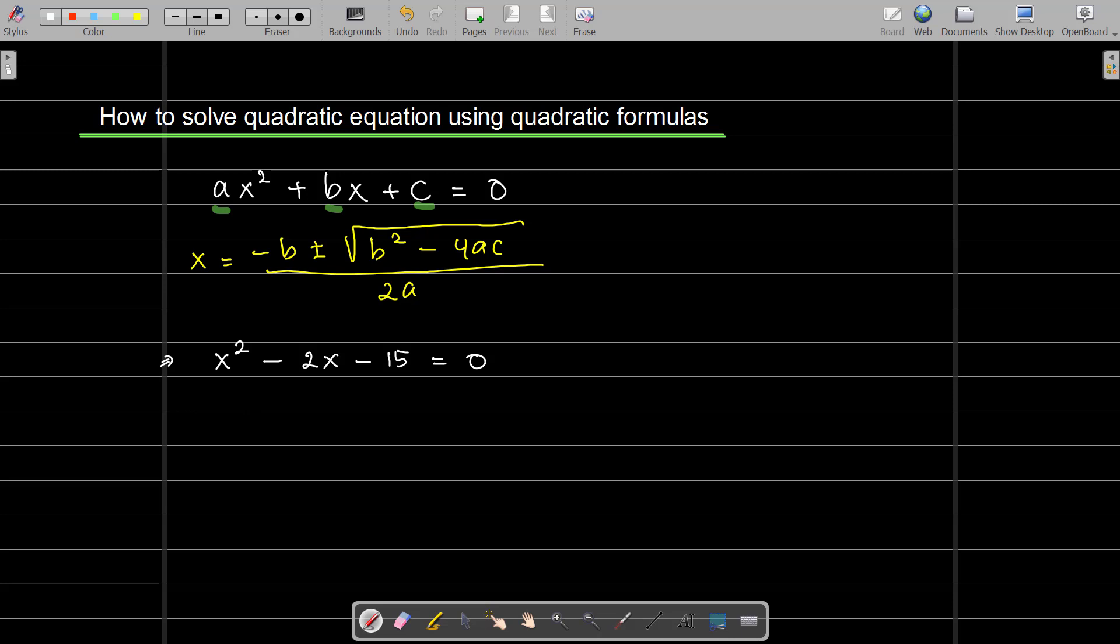Well, a is the number in front of x². If you don't see the number, it is 1. So I can write a = 1. b is the number in front of x. Be careful, this is not only 2 but negative 2. So we have to write b = -2. And c = -15.